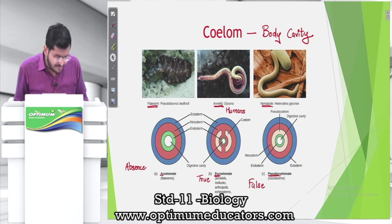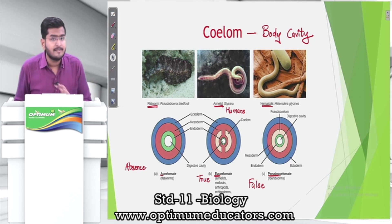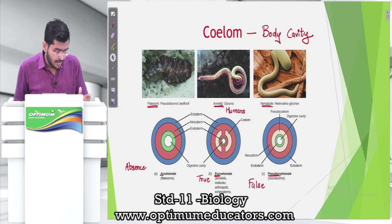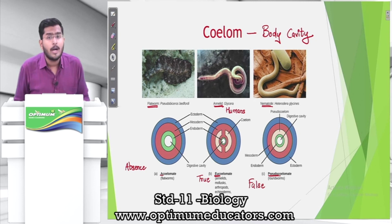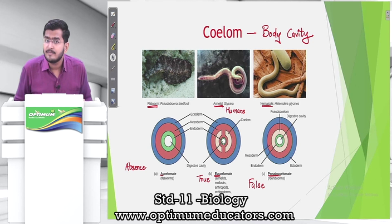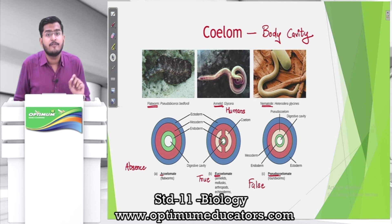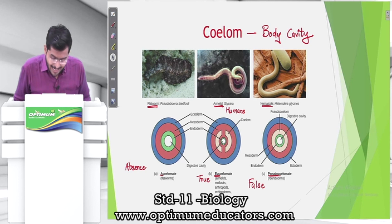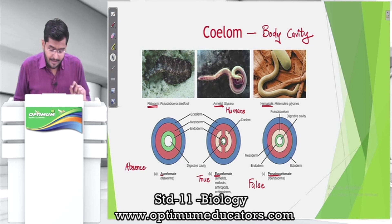So we have three categories: acoelomates (no body cavity, e.g., flatworms), eucoelomates (true body cavity, e.g., annelids like earthworms and humans), and pseudocoelomates (false body cavity, e.g., nematodes like Ascaris included under phylum Nematoda).